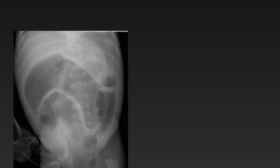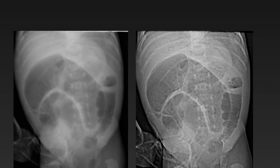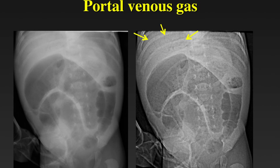Another baby has very distended distal bowel, and here the findings are quite subtle. When looking for pneumoperitoneum or pneumatosis, I use a high contrast setting on our PACS system, and here the finding is much more obvious. The baby has portal venous gas in the setting of necrotizing enterocolitis.